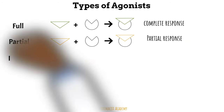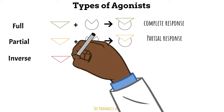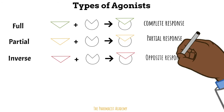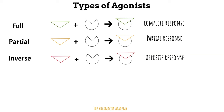Next, we have inverse agonists, which are drugs that bind to a receptor but induce the opposite effect. They are kind of like antagonists, but they work directly on the receptor without blocking the action of a hormone or substance to get the effect. This is something we see with the H1 antihistamines like diphenhydramine or loratadine.